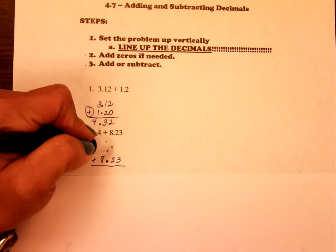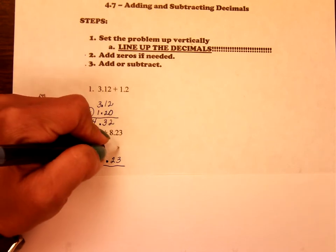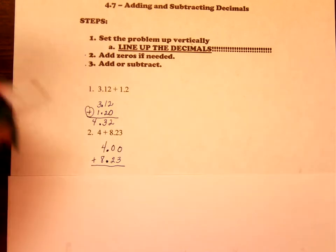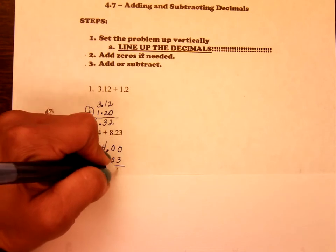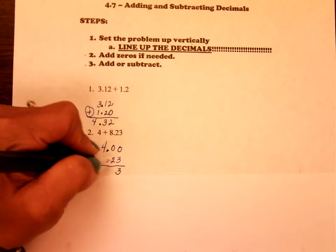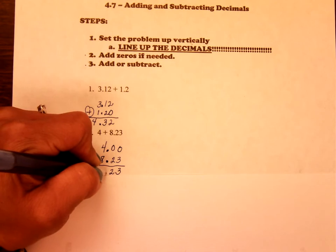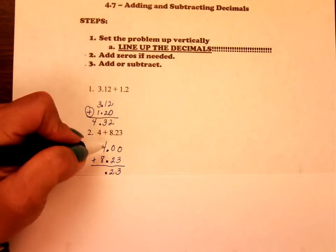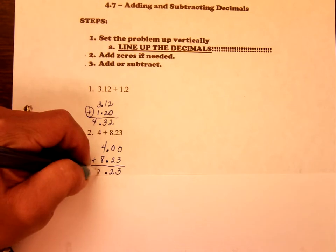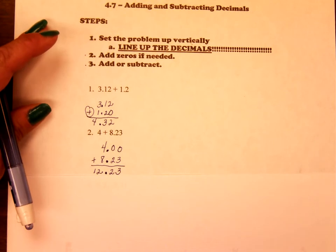Since there is no numbers above the 2 and the 3, you add the zeros. So now you just have to add. 0 plus 3 is 3. 0 plus 2 is 2. Bring down that decimal straight down. And then 4 plus 8 is 12. So the answer is 12.23.